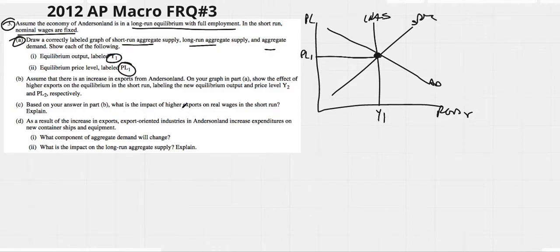Alright, I think we're good. Assume there is an increase in exports for Anderson Land. On your graph in part A, show the effect of the higher exports on the equilibrium in the short run. Y2, PL2. So an increase in exports shifts aggregate demand up. Price level would go up, PL2, Y2. So good so far.